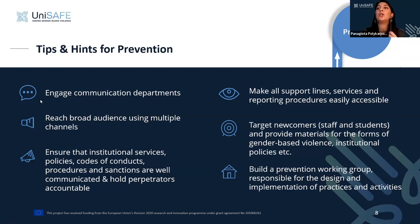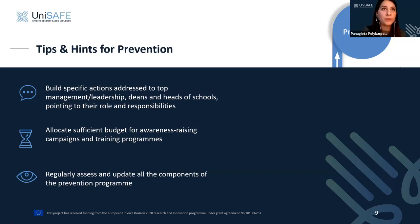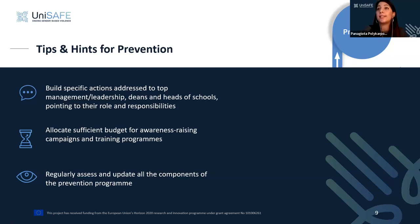Building actions specifically targeting top management, leadership, deans, and heads of department is another good practice, as it highlights their role and responsibility in securing safe working and study environments. Resource allocation must be sufficient to maintain sustainability of the practices. Monitoring and evaluation systems must be in place to assess the components of the prevention program and ensure it remains relevant and effective.